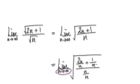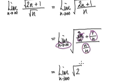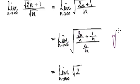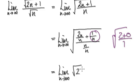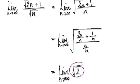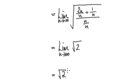As n tends to infinity, this is going to be 0, this is going to be 1, and this here is going to be 2. So it becomes root of 2 plus 0 over 1, which is 2. So this is a constant — there's no n in here, so it's just root 2. The answer is root 2.